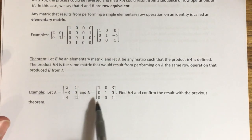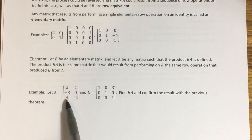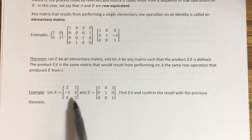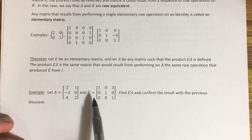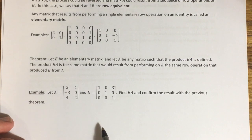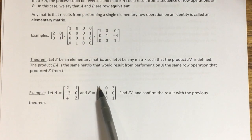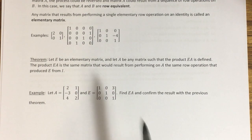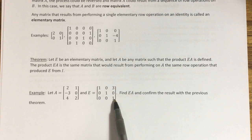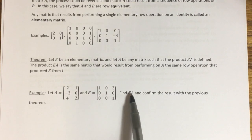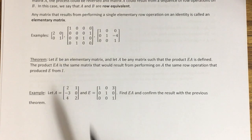Here we have a 3×2 matrix A, and we want to multiply it on the left by this elementary matrix E. We know this is an elementary matrix because it's obtained from the identity by adding three times the third row to the first row. What we want to do is perform this product and then confirm the theorem we just stated.